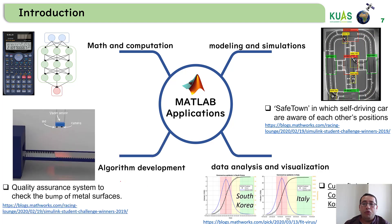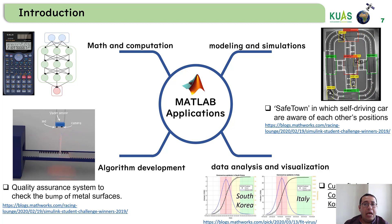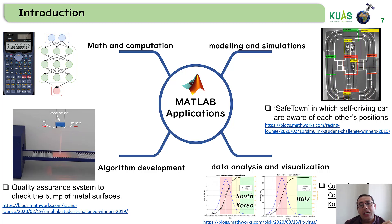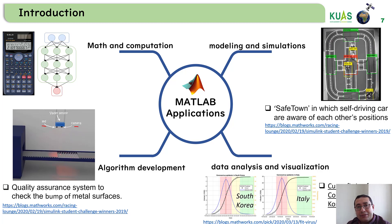We can also use MATLAB for algorithm development. For example, there is a machine with a moving metal plate, and it has a camera and a light source, and we need to check if the metal surface is flat or has any bumps. So MATLAB can be used in a very wide range of applications. This is just an introduction — let's access MATLAB in the next video. Thank you, bye-bye.